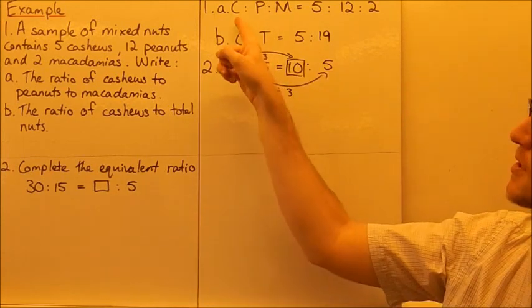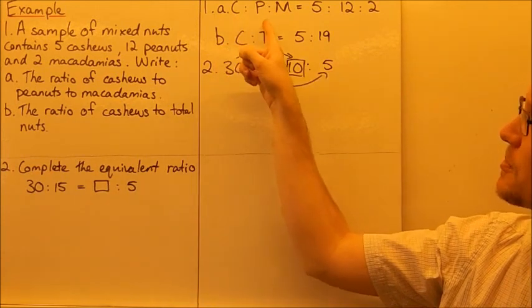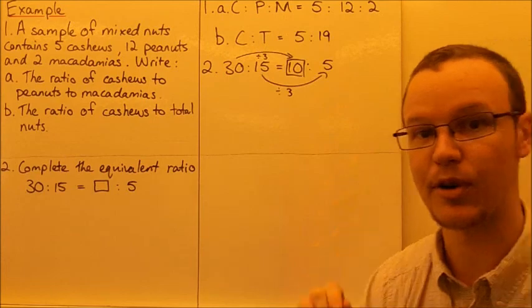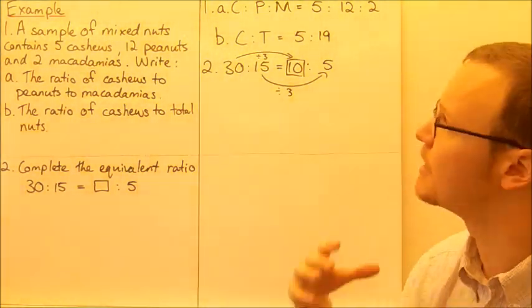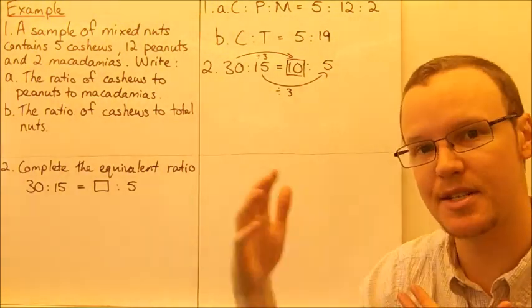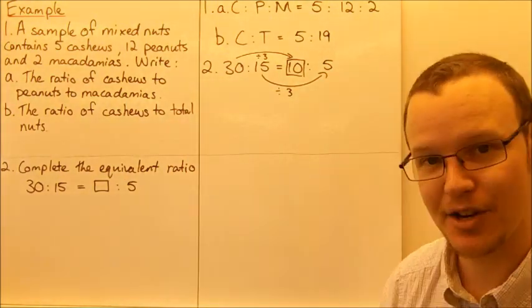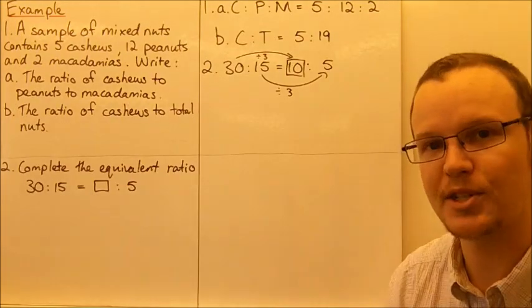Let's have a look at that one first. Cashews to peanuts to macadamia nuts—we've got three numbers in our ratio this time. That's okay, you can have as many numbers as you need, as many colons to separate the ratio as you need for the different quantities that you have.